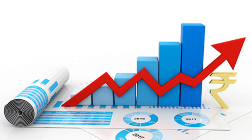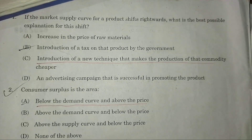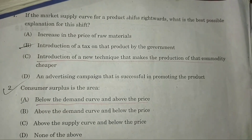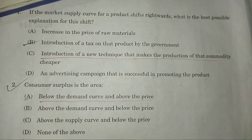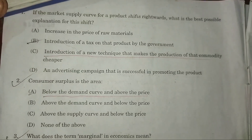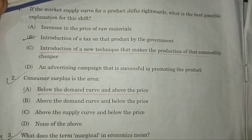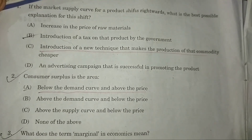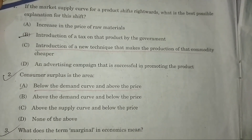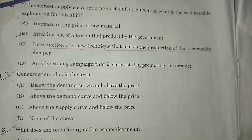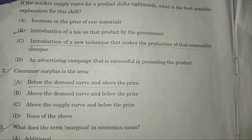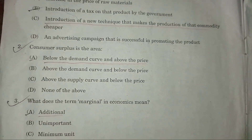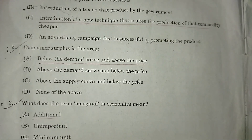Question 1: If the market supply curve for a product shifts rightward, what is the possible explanation for this shift? Answer: Option C — introduction of a new technique that makes production of the commodity cheaper.